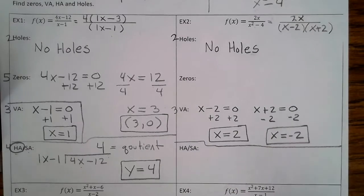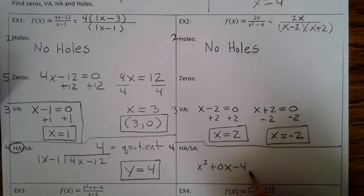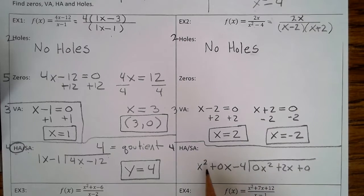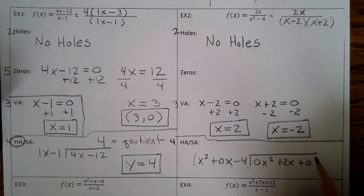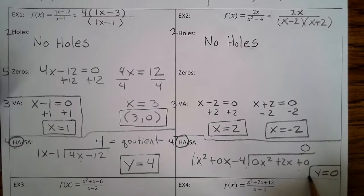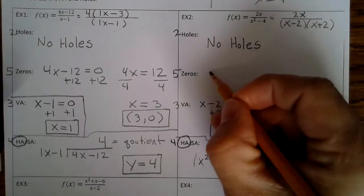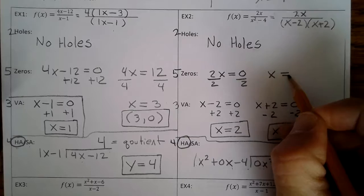Step 4: find the horizontal or slant asymptotes — we divide. We have x squared minus 4 divided into 0x squared plus 2x plus 0. We add 0x squared and 0 so we have three terms in each. What do you multiply 1x squared by to give 0x squared? The answer is 0. That's the quotient — no x's — so it's a horizontal asymptote at y equals 0. Step 5: set the numerator equal to 0: 2x equals 0, so x equals 0. We have an intercept at (0, 0).